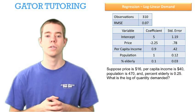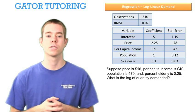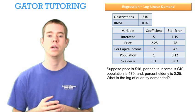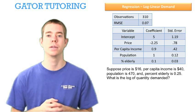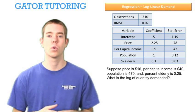Suppose the price is $16, per capita income is $40, population is 470, and the percent elderly is 25%. What is the log of the quantity demanded?